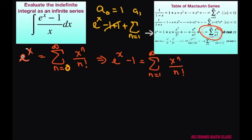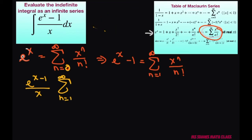Now we're going to figure out e to the power of x minus 1 divided by x. That's just going to be the sum from n equals 1 to infinity, and all you're doing is multiplying x to the power of n divided by x — so that's x to the nth power times x to the negative 1, giving us x to the n minus 1 divided by n factorial.